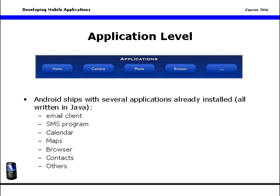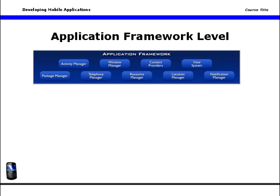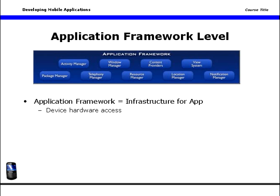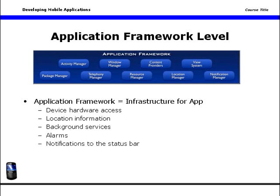The application framework level provides what we might call infrastructure for the app. It includes device hardware access, location information, background services, alarms, notifications to the status bar, and much more.